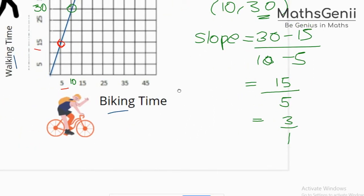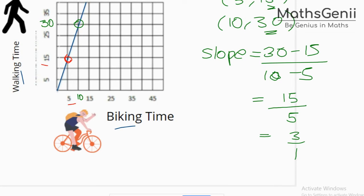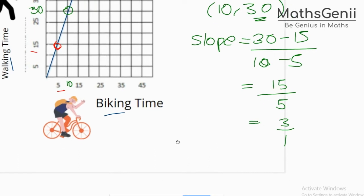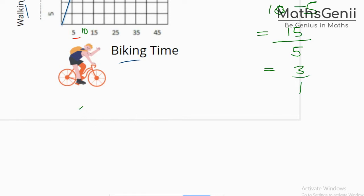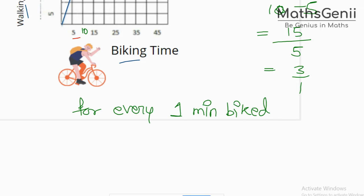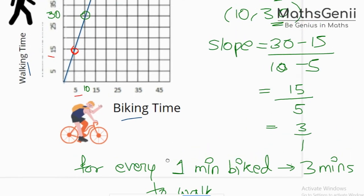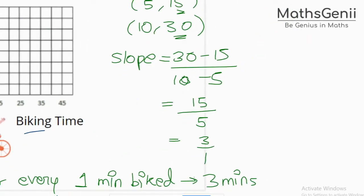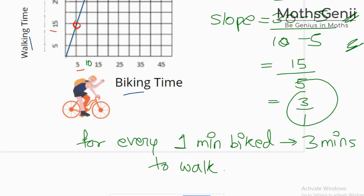This gives 15/5 which equals 3, or 3 upon 1. My aim was not just to find the answer but to tell you what rate of change is. 3 upon 1 means that for every 1 minute biked, it would take 3 minutes to walk. This is the conclusion, and this is how you find the rate of change.